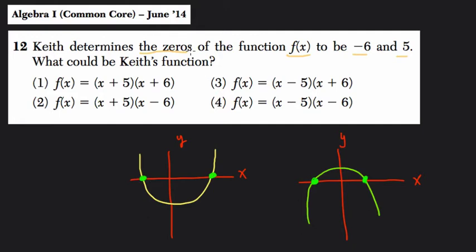So here, the zeros of the function, they determine the function zeros to be negative six. So maybe this is about the point. It would be the point negative six zero on a graph. And five. So five, that point would be the point five comma zero.